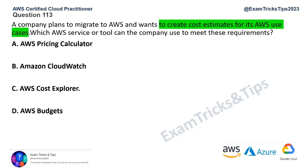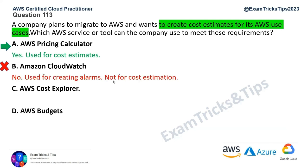Option B, CloudWatch, is used for creating alarms — nothing to do with cost estimation. Option C, Cost Explorer, is used once you are already on the cloud to analyze detailed cost reports, examine where you're spending more or less, and optimize — but it cannot estimate costs before migration. So Cost Explorer is incorrect.